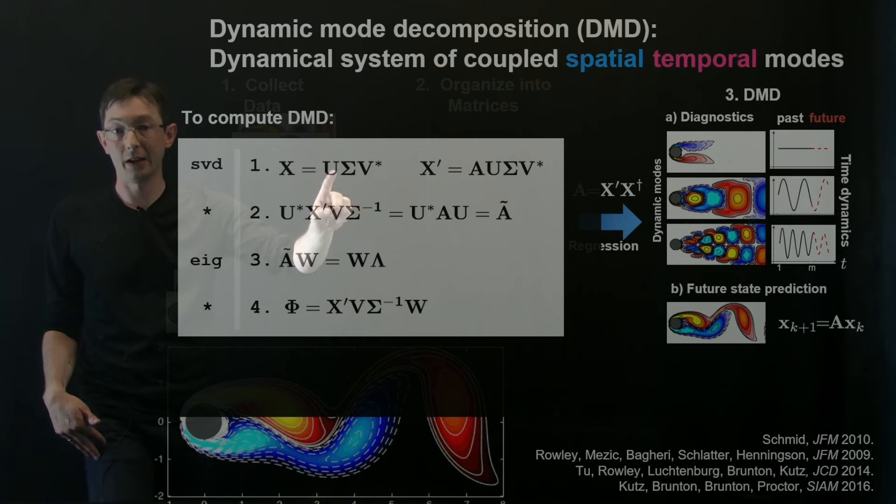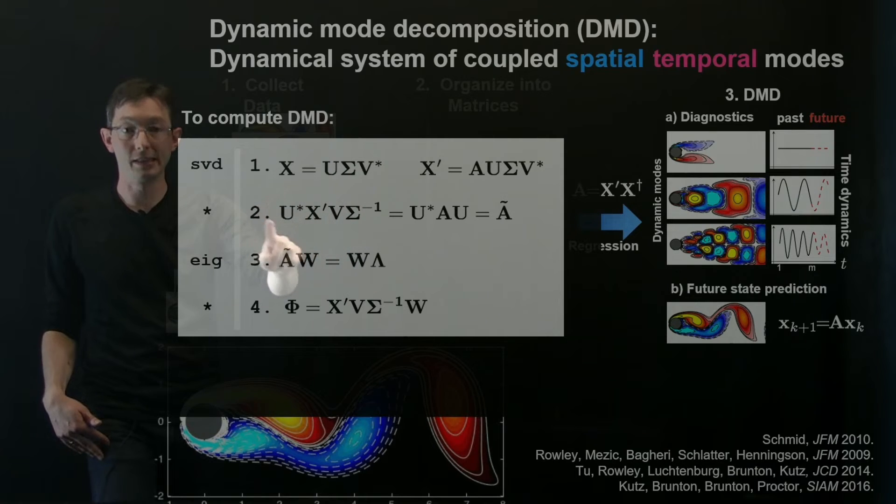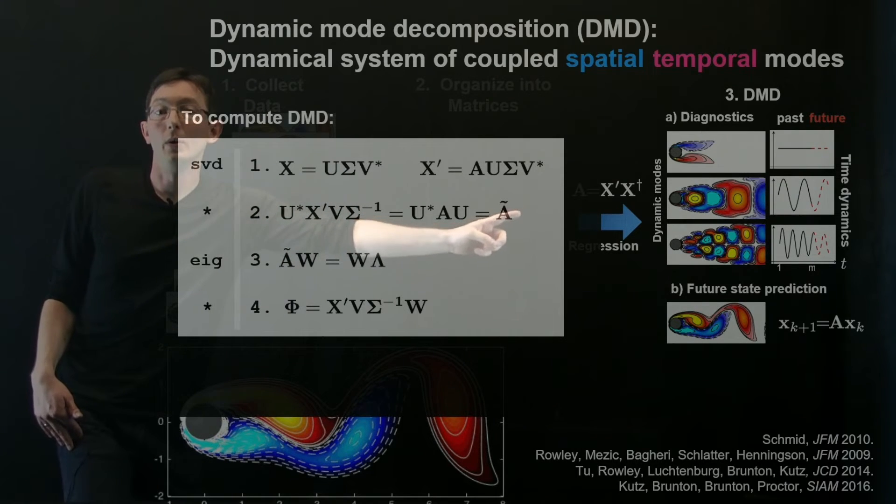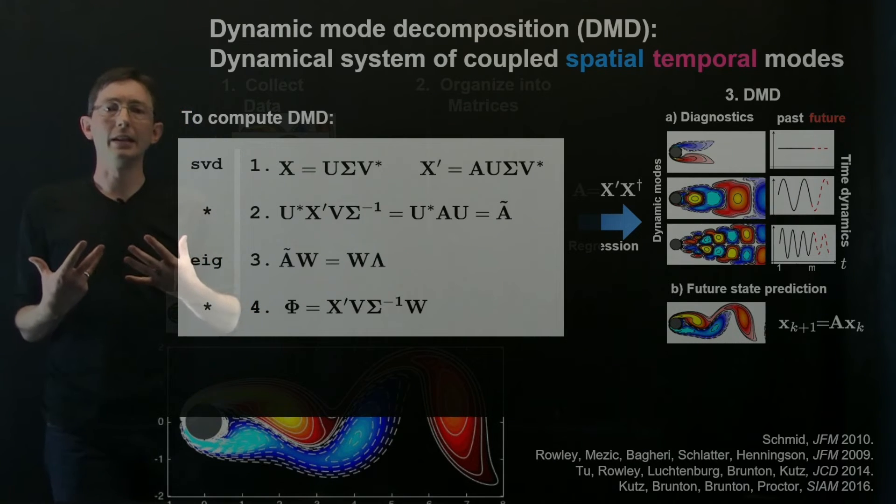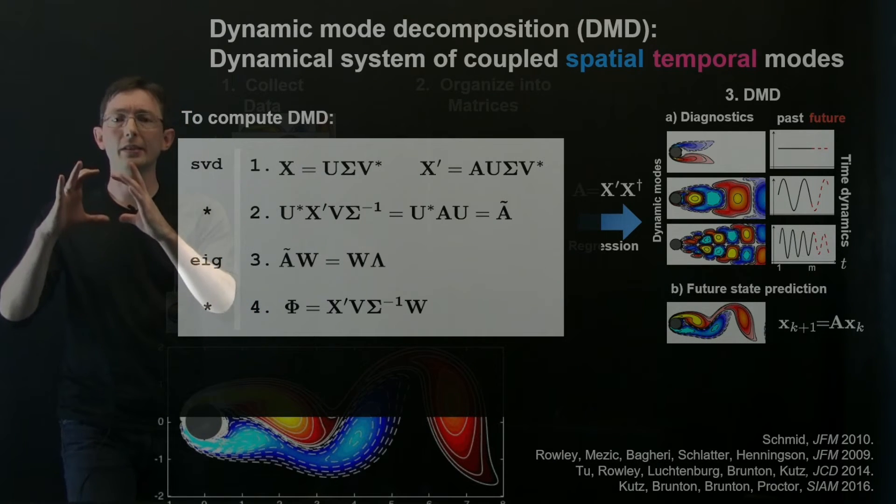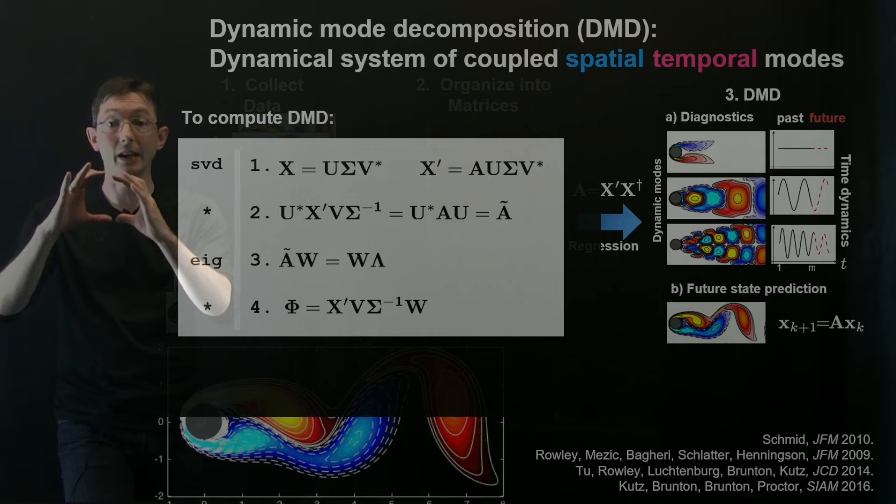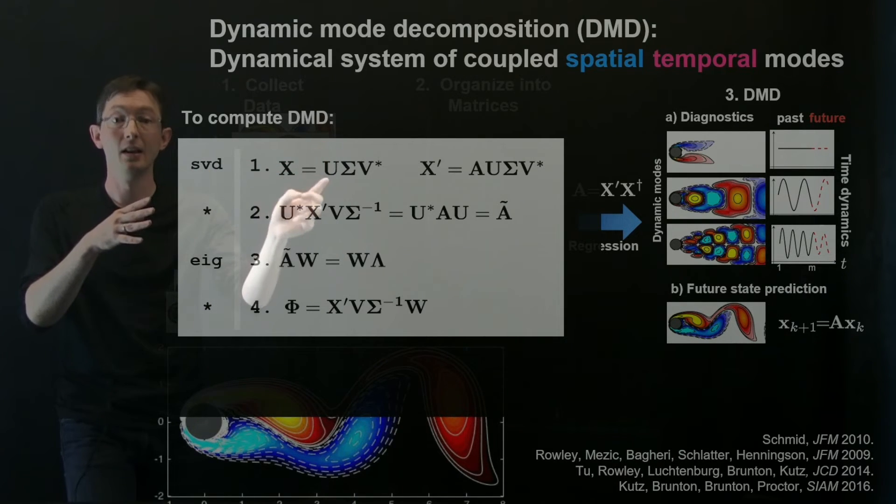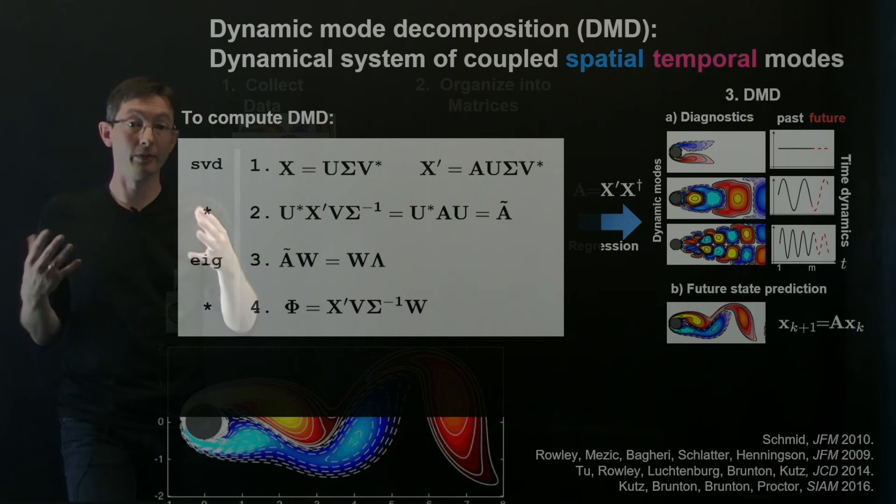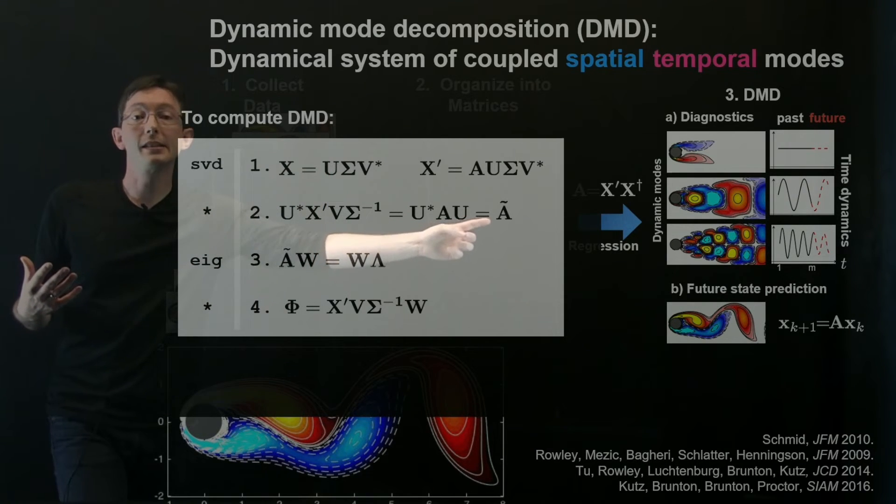So if I had a thousand snapshots in time, this would be a thousand by thousand matrix instead of a million by million matrix. And so then I can actually isolate this A tilde directly from the data that I have. So I take the SVD of X. So I have U, sigma, and V. I have X prime and I compute this quantity here, which is this little A tilde matrix. And the way I think about A tilde, A tilde is a linear best fit dynamical system that tells me how my POD modes evolve in time, how these dominant coherent patterns evolve in time. And so this is a much, much smaller matrix. It's maybe thousand by thousand or a hundred by hundred.